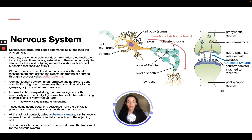Neurons are the basic nerve cells. They conduct information electrically along incoming axon fibers — a long extension of a nerve cell body that sends impulses — and outgoing dendrites, which are shorter branch extensions that receive the stimulus.